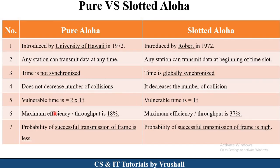Pure Aloha has a maximum efficiency of 18% for successful communication between sender and receiver, while Slotted Aloha has a maximum efficiency of 37%. In Pure Aloha, the probability of successful frame transmission to the receiver is lower, whereas in Slotted Aloha the probability of successful transmission is higher. This is the basic difference between Pure Aloha and Slotted Aloha.